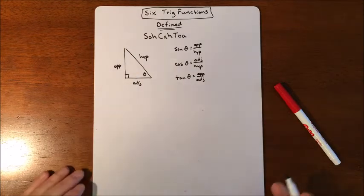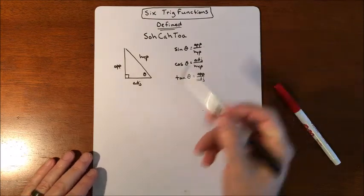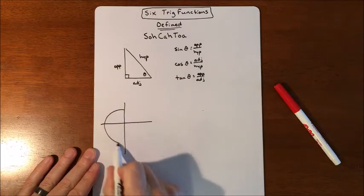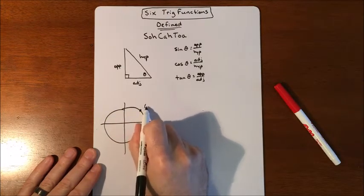So in trig, we're going to do the same thing. There's six of them because each of these has a reciprocal. So we're going to build ours off of a circle, and we're just going to plot a random point on this circle.